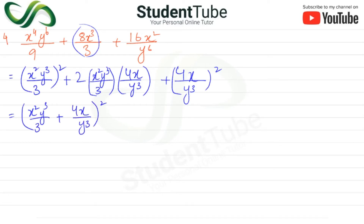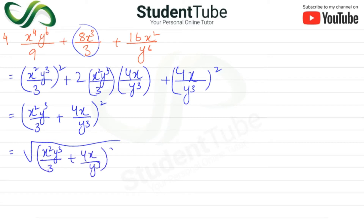This formula is (a + b) squared — that is the formula. We apply the square root, so the square root and the square cancel out, and our answer is: X squared Y cubed upon 3 plus 4X upon Y cubed.